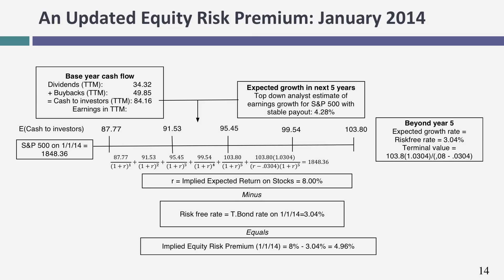Let me update this number to show how much it changes. Moving to January 2014 — just two months after my November 2013 estimate — the S&P 500 had climbed to 1,858. Cash flows were a little higher at around 84, expected growth rate slightly lower at 4.28%, and the risk-free rate changed slightly to 3.04%. Going through the same process — solving for the discount rate that makes the present value of cash flows equal to the index level — I get 8%. Subtracting the risk-free rate, the implied equity risk premium on January 1st, 2014 is about 4.96%, much below what we estimated just two months prior.